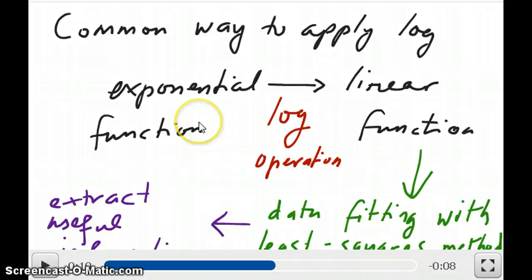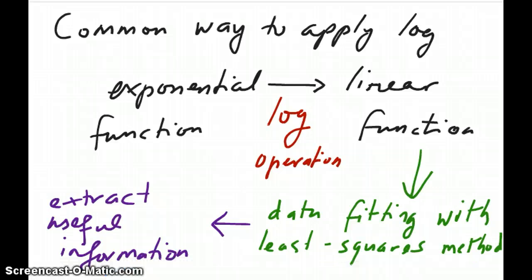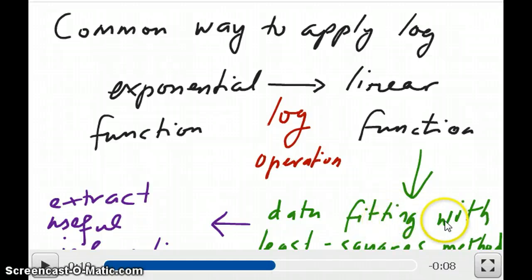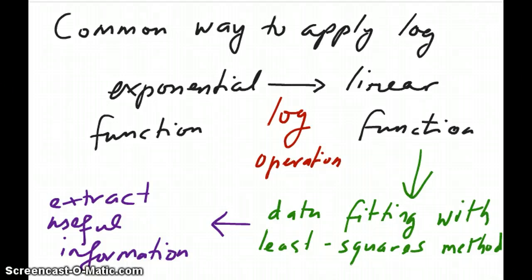You're going to start with an exponential function, do certain manipulations using log functions, and at the end of those manipulations you're going to get a line equation. The reason why we want to do this conversion from exponential to line is usually because the linear form of the data can be fitted fairly easily. We'll talk about data fitting in a bit more at the conclusion of this video.